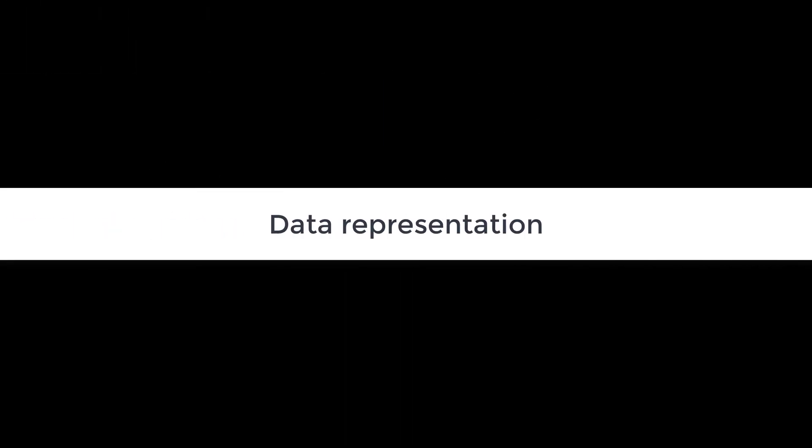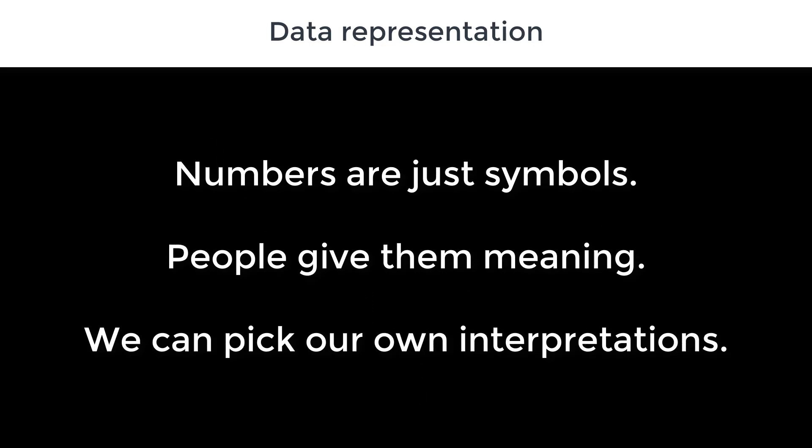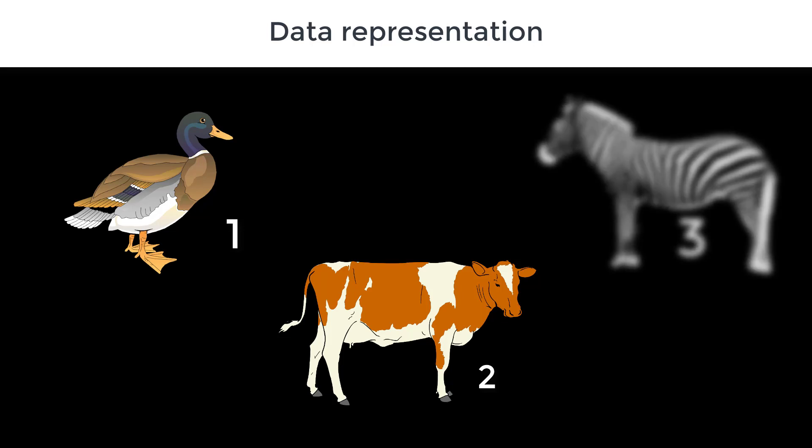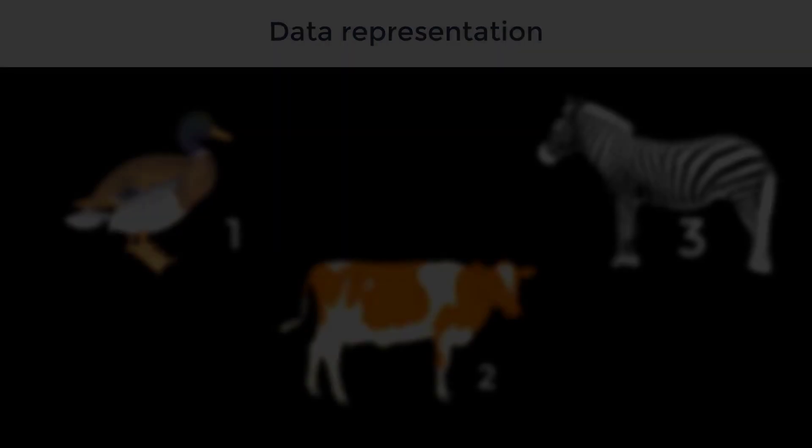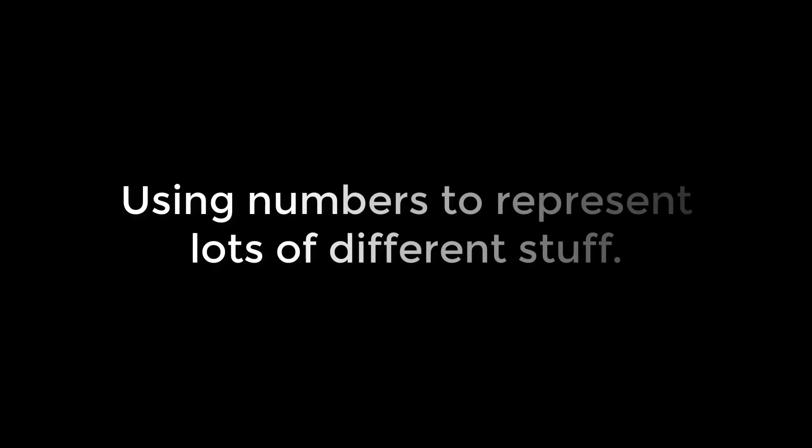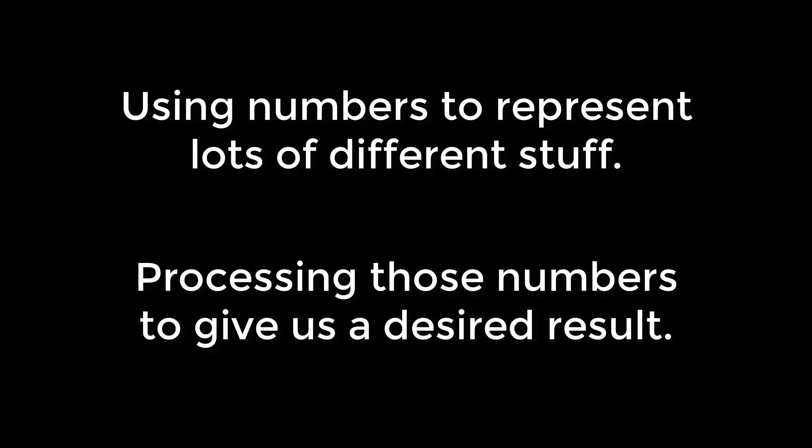But we need a way to represent these inputs and outputs that the computer can understand. What we'd like to do is have a set of symbols which we can interpret to mean different things. This is really the essence of human communication, but crucially, it's also the essence of mathematics. After all, numbers are just symbols. We can actually supply different interpretations for those numbers. For example, 1 might represent a duck, 2 might represent a cow, and 3 might represent a zebra. So the essence of computing is using numbers to represent information, and then processing those numbers to achieve some new information that we didn't know before.